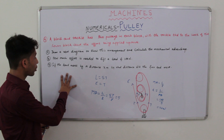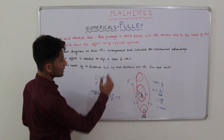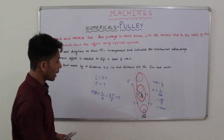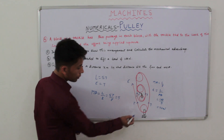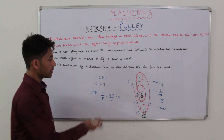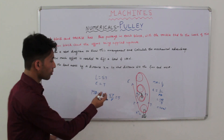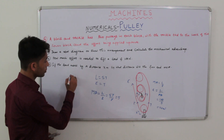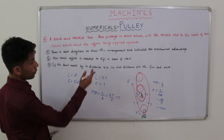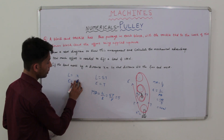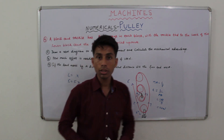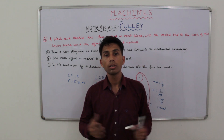Moving on to the third part: if the load moves by a distance x meters, by what distance will the free end move? Since the load and effort ratio is 5, if the load moves by distance d then the effort end moves by 5d. So if the load moves by x meters, the free end moves by 5x meters. Friends, this was it for this video. More videos are coming soon, so till then stay tuned.